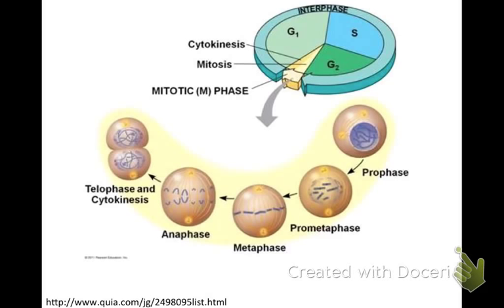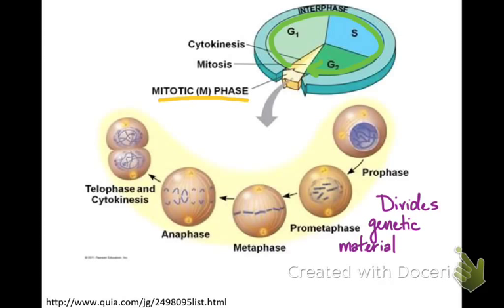After interphase, the cell moves into mitosis. Mitosis is the process of dividing the genetic material. Eukaryotic cells that have gone through mitosis should end up as two identical daughter cells.